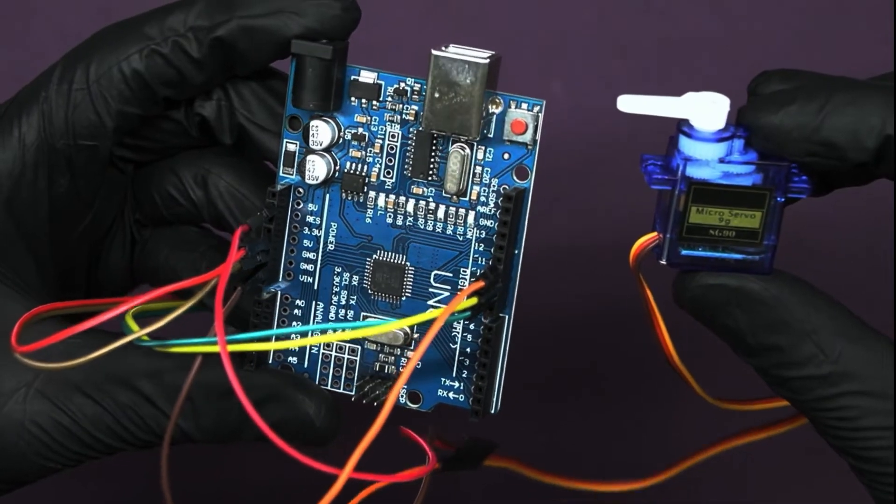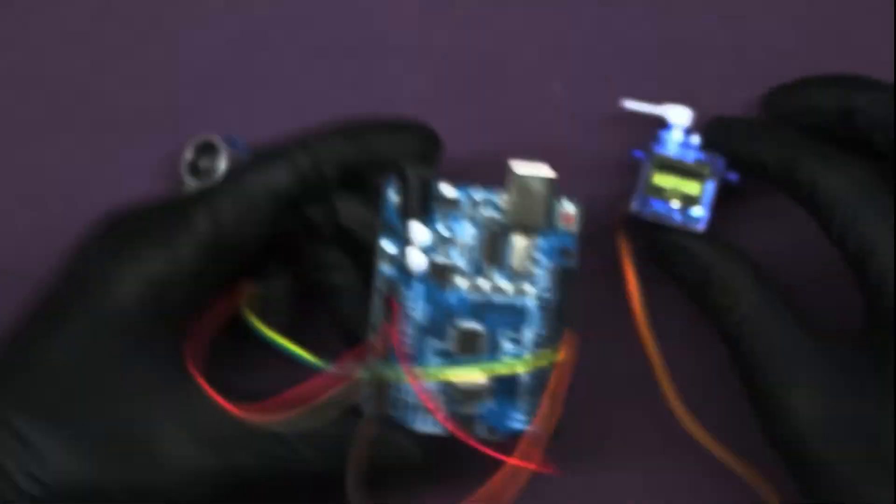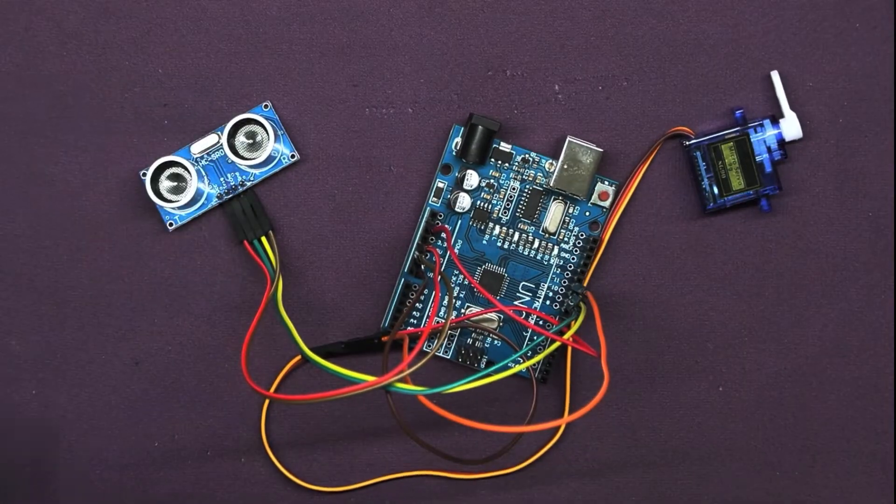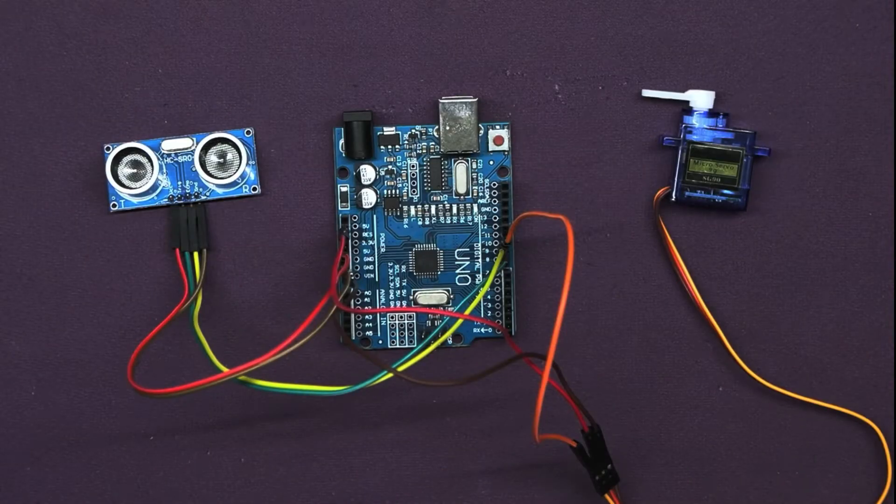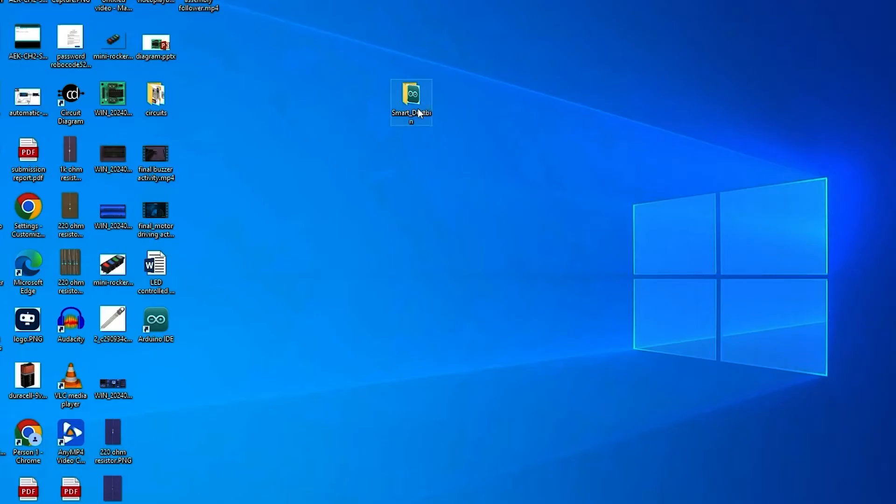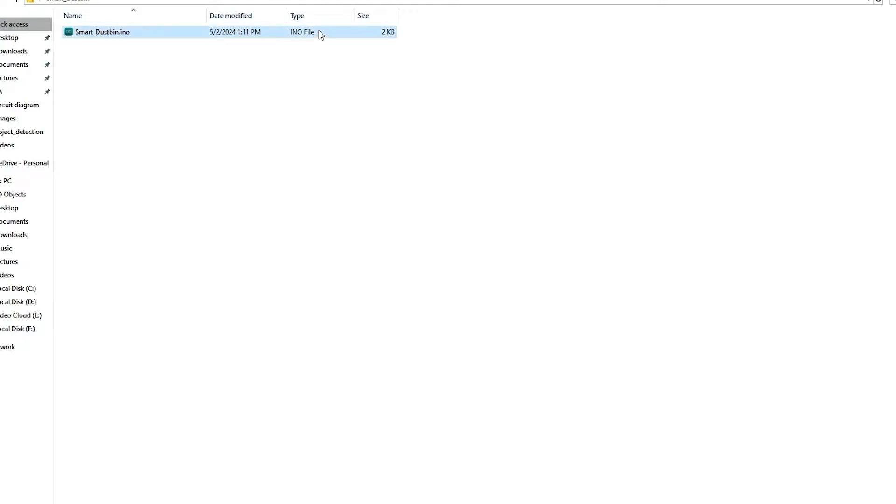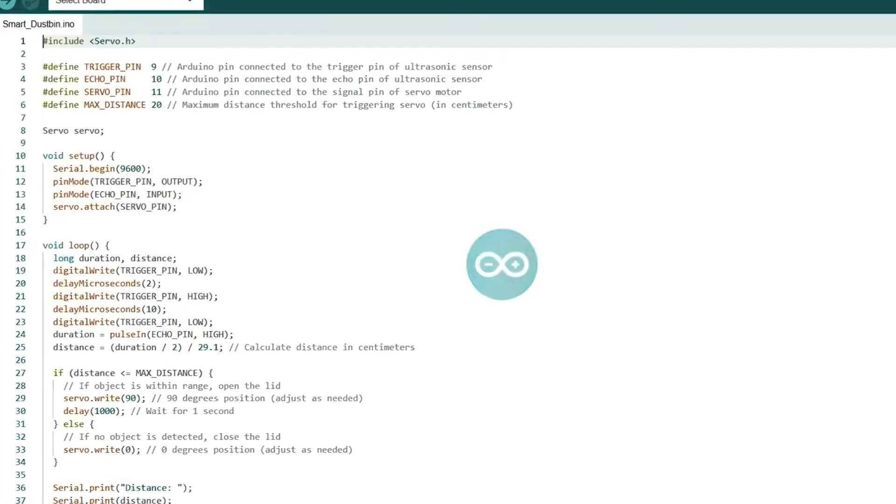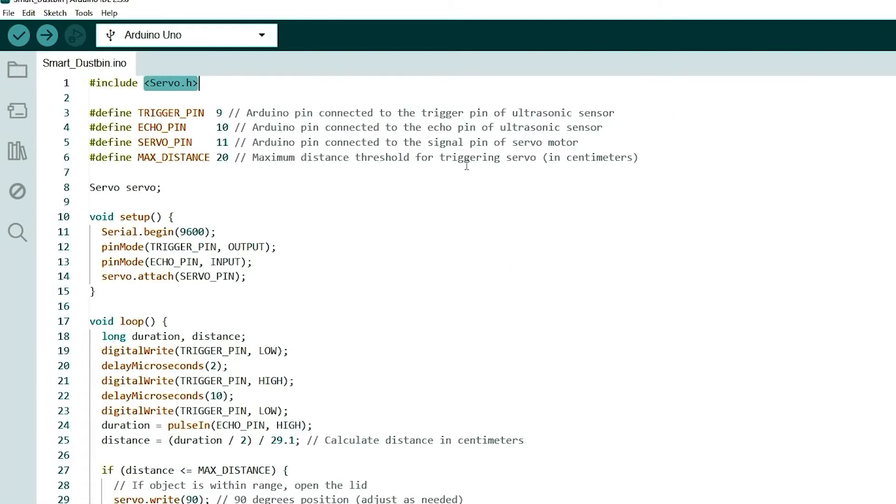With our circuit setup, it's time to write some code. Download the code file by using the link provided in the description below. Now open the file if you've already downloaded the Arduino IDE, otherwise download the Arduino IDE first. Here you can see we have included the servo library as we'll be using it to control the servo motor. Then we have defined the pins for the ultrasonic sensor and the servo motor.